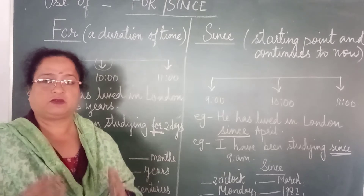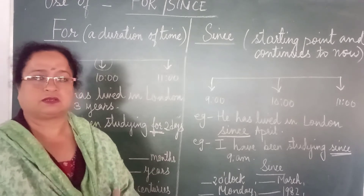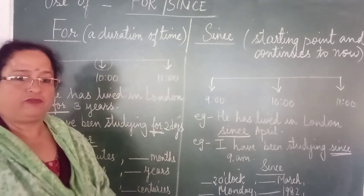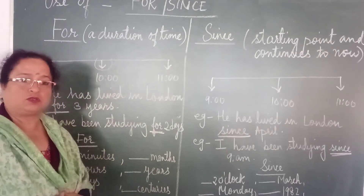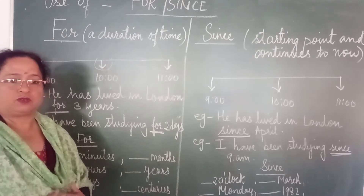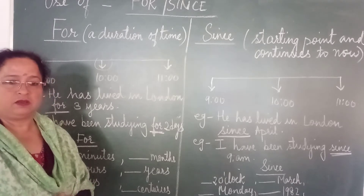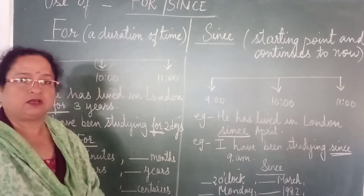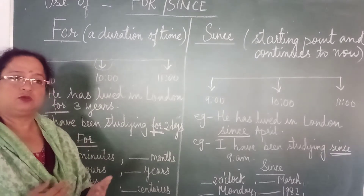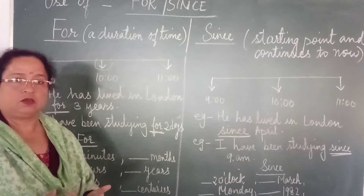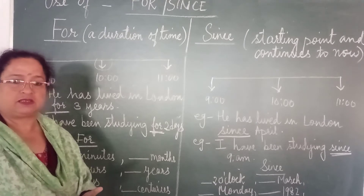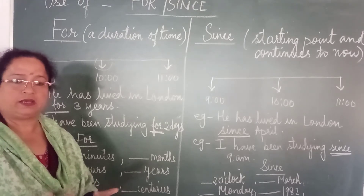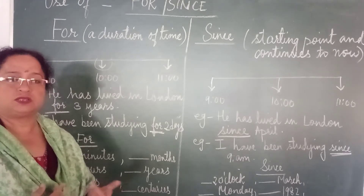'For' is also used when we talk about minutes — for example, ten minutes; hours — two hours; five days; six months; one year; two centuries. These are all durations of time used with 'for'.